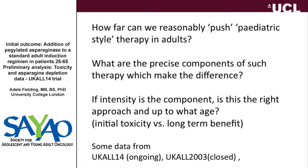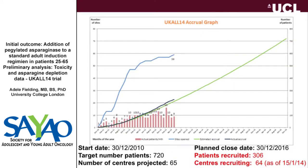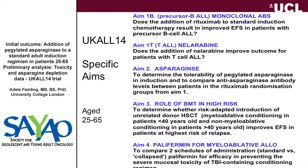UCAL-2003 enrolls patients up to the age of 25. It's quite instructive to look at the big differences in toxicity that occur between younger adults and older adults. UCAL-14 plans to recruit 760 patients in total, and we're currently up to almost 400 patients, with several different questions being asked in the trial.